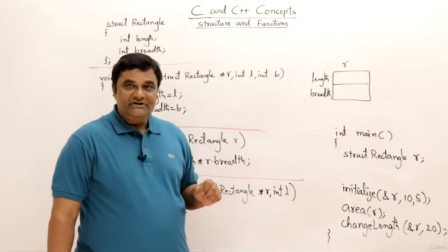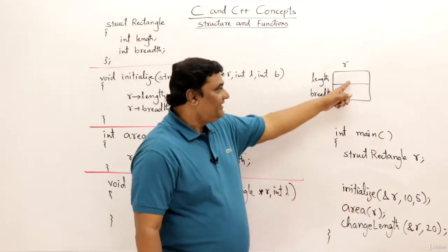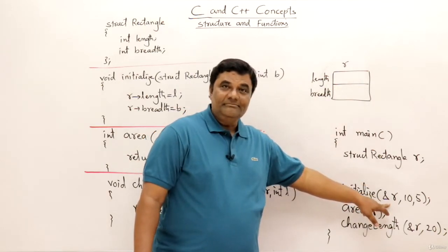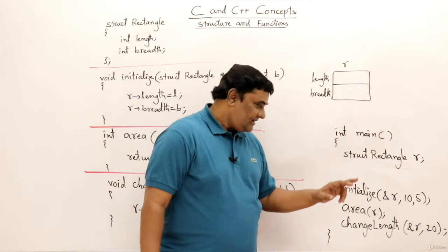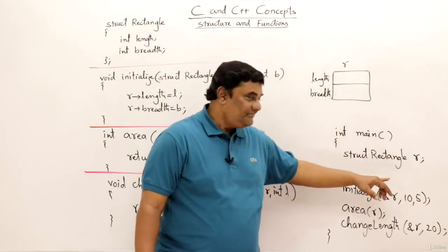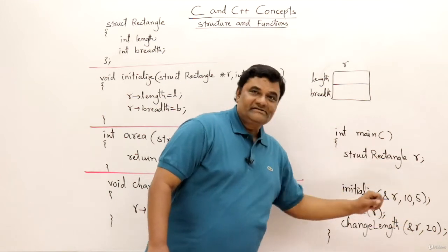Now if you observe this function, this initialize function should modify this one. So function must be called by address. I am sending ampersand address of a rectangle. Then change length function should change this rectangle, that is actual parameter this one. So here I am sending by address.